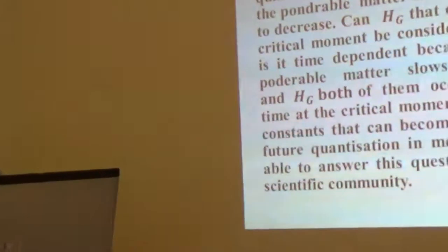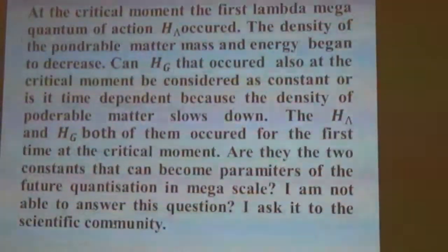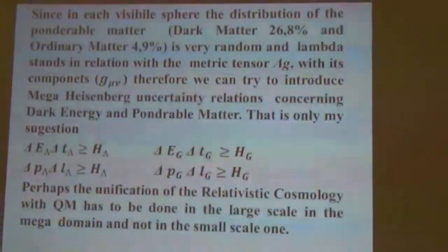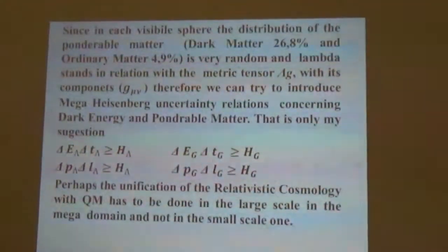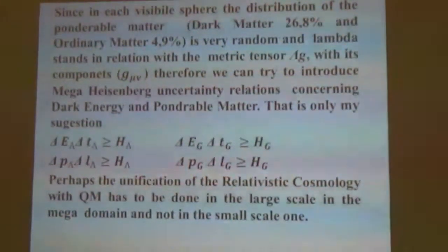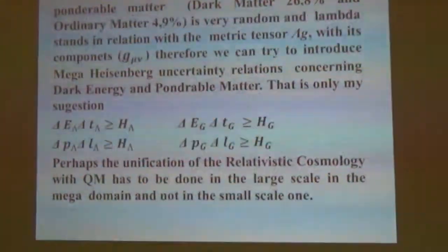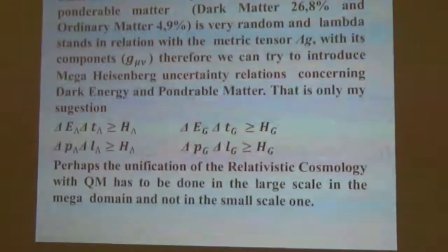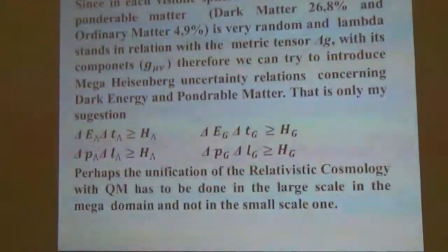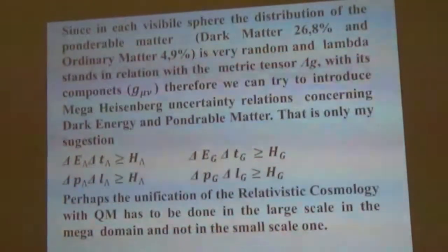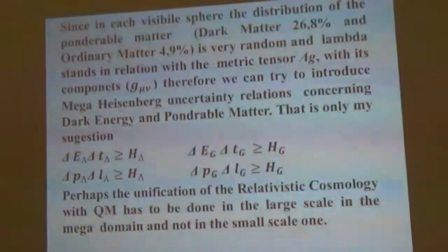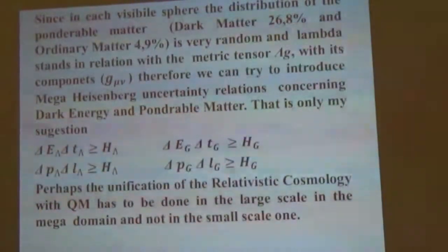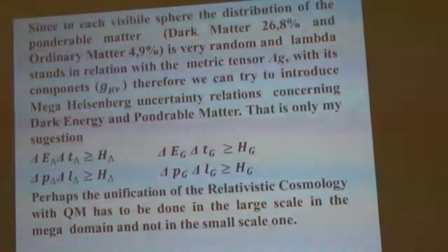Since in each visible sphere the distribution of ponderable matter — dark and ordinary matter — is very random, and lambda stands in relation with the metric tensor and its components, we can try to introduce mega Heisenberg uncertainty relations concerning dark energy and ponderable matter — that is only my suggestion. Perhaps the unification of relativistic cosmology with quantum mechanics has to be done in the large scale, in the mega domain, and not in the small-scale one.